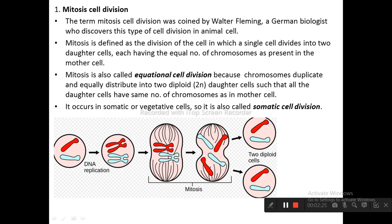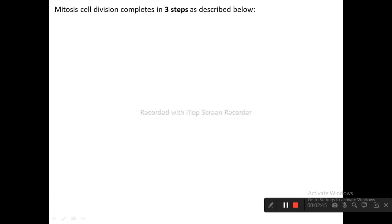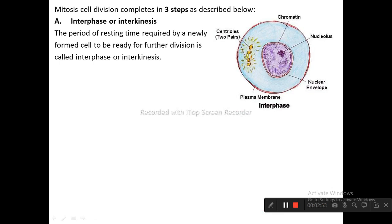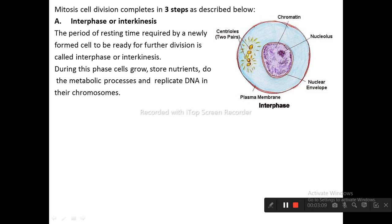All daughter cells have the same number of chromosomes as in the mother cell. It occurs in somatic or vegetative cells, so it is also called somatic cell division. This type of cell division is responsible for the growth of the organism. Mitosis cell division occurs in three steps. The first is interphase or interkinesis — the period of resting time required by a newly formed cell to prepare for further division. During this phase, cells grow, absorb nutrients, do metabolic processes, and replicate DNA in their chromosomes.